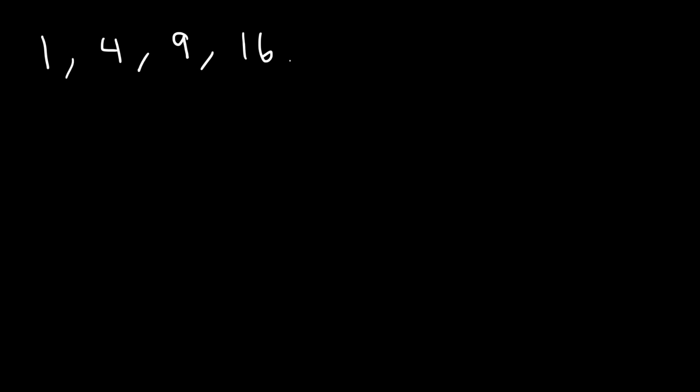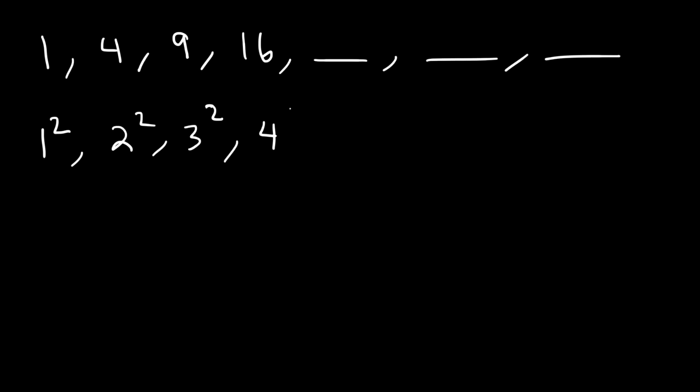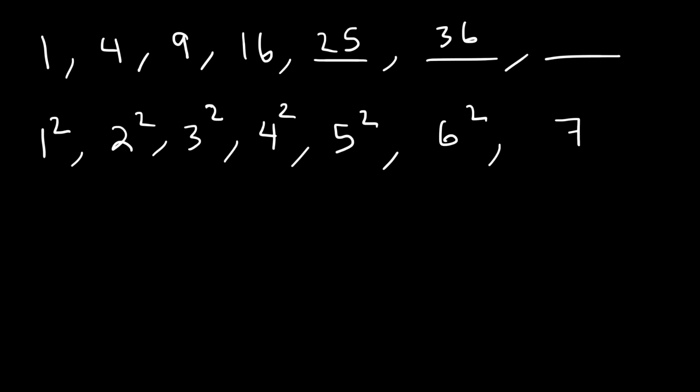Go ahead and find the missing numbers in the sequence. Feel free to pause the video. If we look at the first example: 1 squared is 1, 2 squared is 4, 3 squared is 9, 4 squared is 16. So the next number has to be 5 squared, which is 25. And then 6 squared, which is 36. And 7 squared, which is 49.